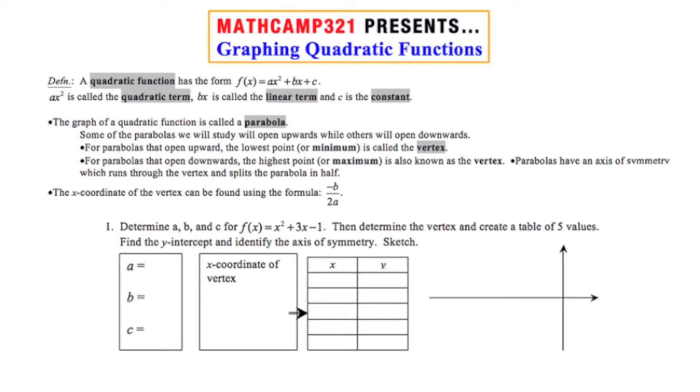What is a quadratic function? Well, a quadratic function is a function in the form of f of x equals ax squared plus bx plus c. ax squared is called the quadratic term, bx is called the linear term, and c is called the constant.